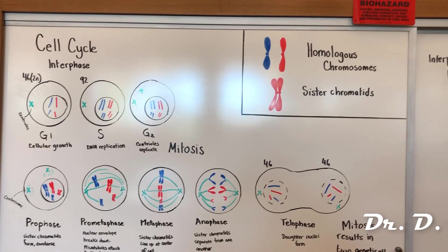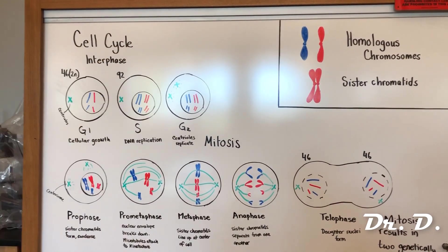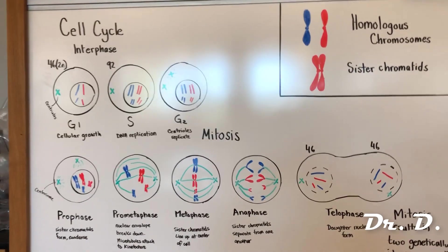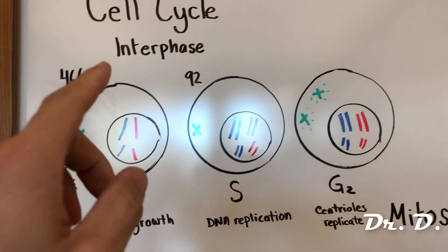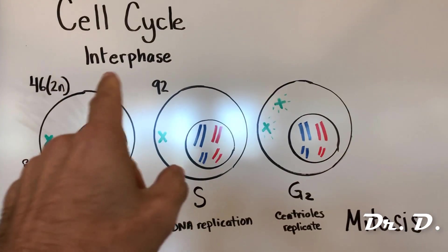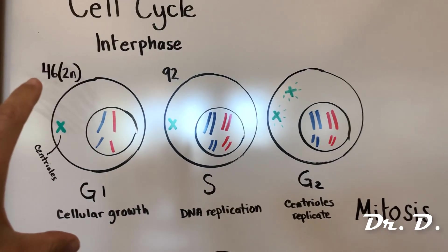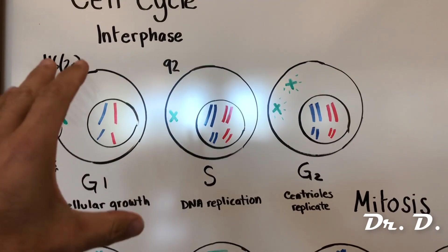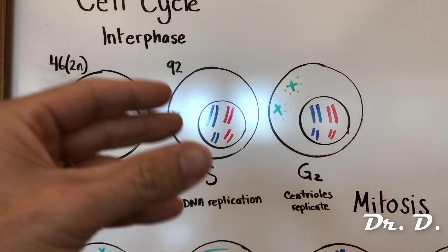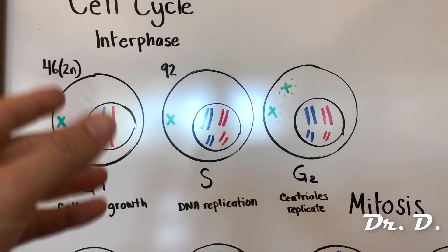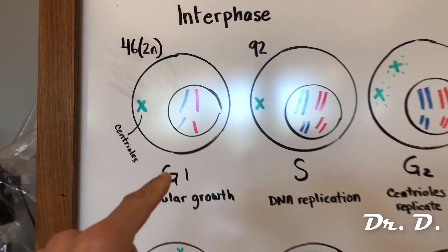Hey everyone, Dr. D here. Today I'm going to explain the cell cycle. The cell cycle begins with a process known as interphase. Interphase takes up about 90% of the cell's cycle time — this is essentially where the cell is growing, functioning, and preparing to divide. It starts with G1.